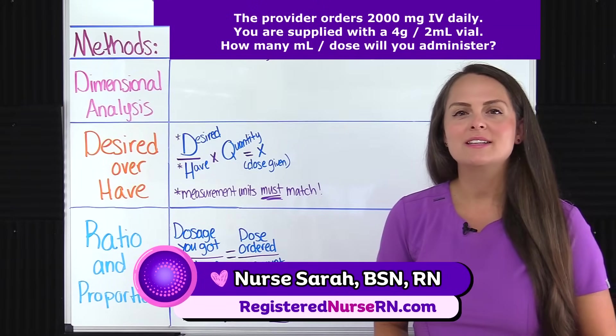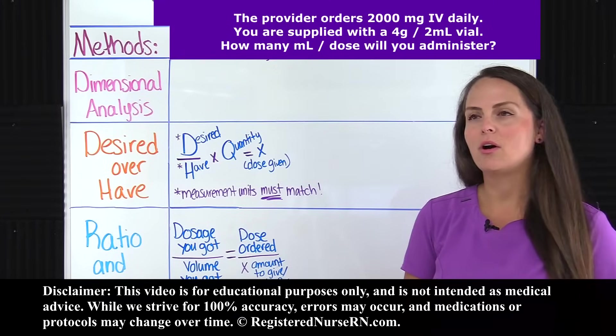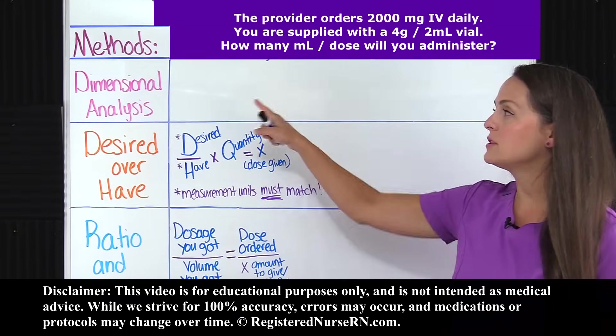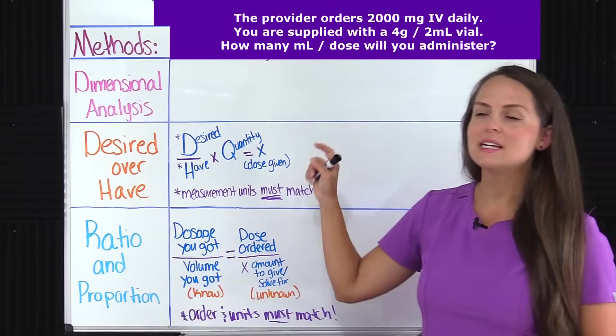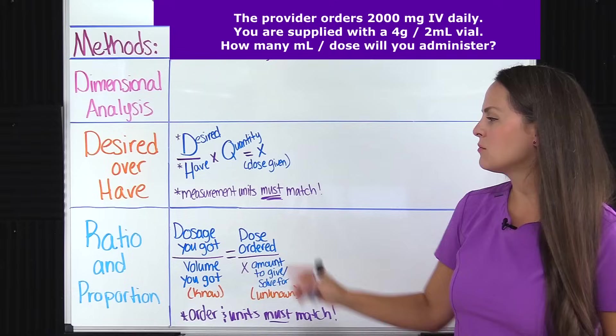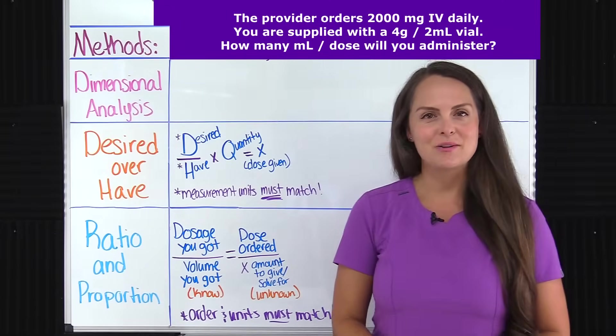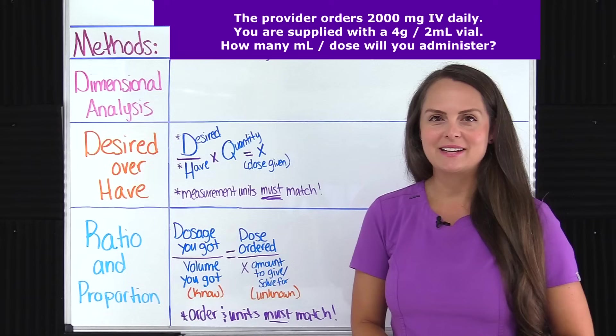I'm going to show you three different ways on how to work dosage calculation problems using dimensional analysis, desired over have, and ratio and proportion. So let's get started.